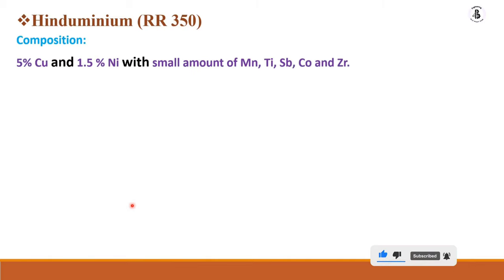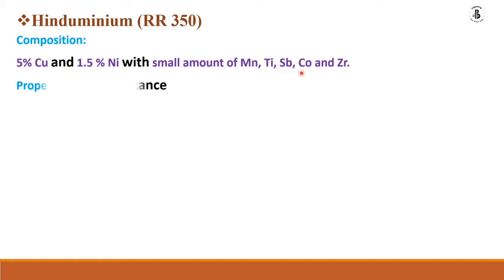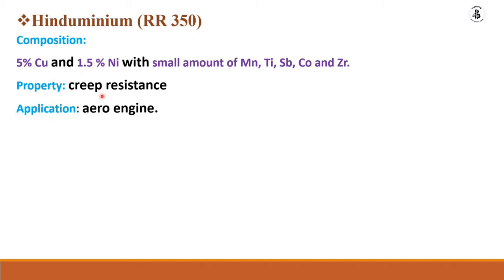Hiduminium, also known as RR350, has a composition of 5% copper, 1.5% nickel, with small amounts of magnesium, titanium, cobalt, and zirconium. Its key property is creep resistance — meaning it can sustain load at higher temperatures over long periods of time. Its main application is in aero engines.